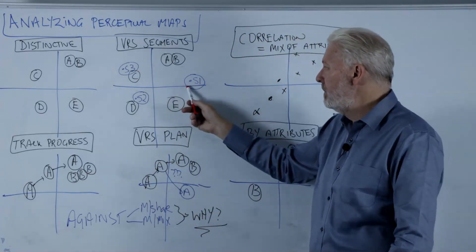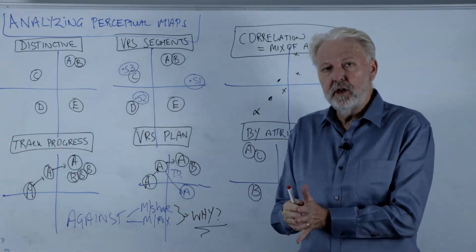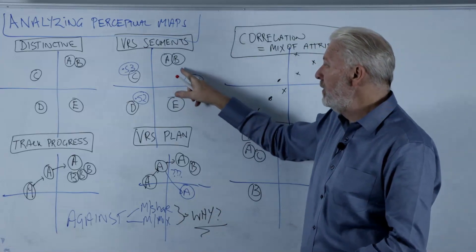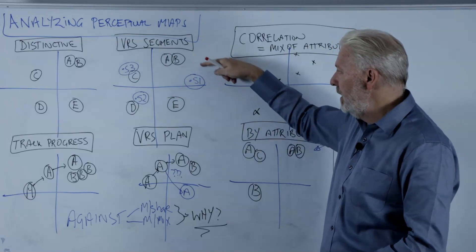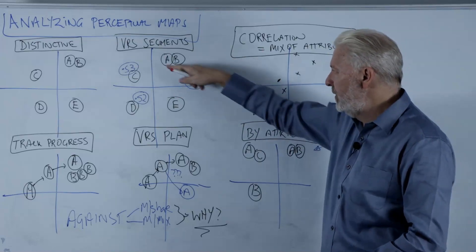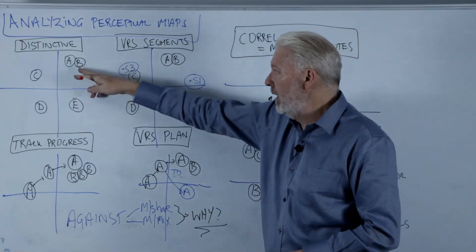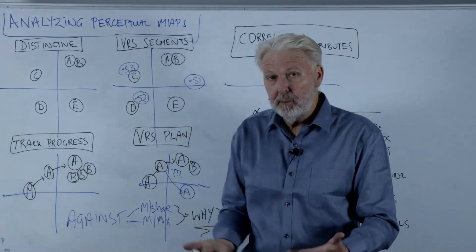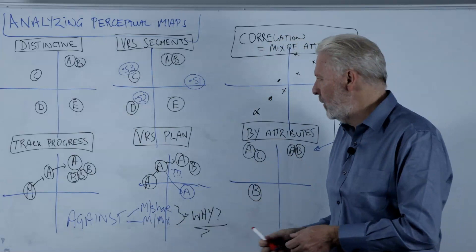So we've got a time thing there. We could also add a time thing to these segments as well. So consumer needs change over time, preferences change over time. So segment one possibly was up here at one point and has drifted down in terms of their preference on this attribute. And that's why suddenly they were well positioned but a changing need. So that's something else that we could use time-based perceptual maps for.